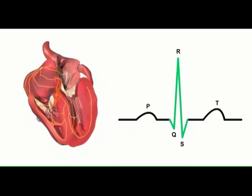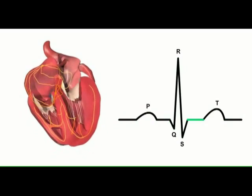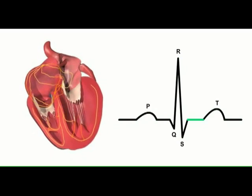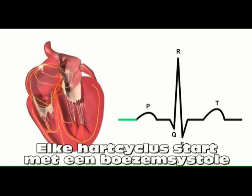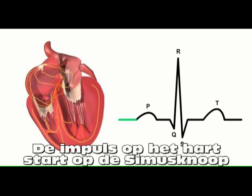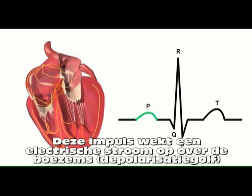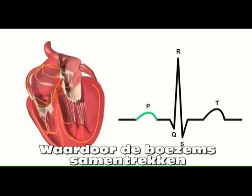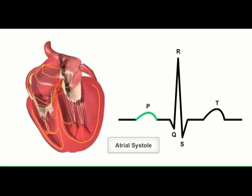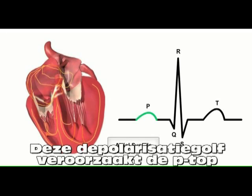Let's look at what happens during a single beat of the heart and how these events are depicted on an ECG. In a normal heart, each beat begins in the right atrium with an action potential signal from the sinoatrial, or SA, node — the heart's natural pacemaker. The signal spreads across both atria, causing the muscle cells to depolarize and contract, inducing a phase known as atrial systole. On the ECG, this atrial depolarization is represented by the P wave.